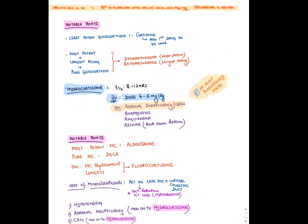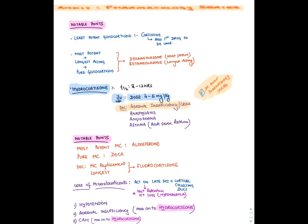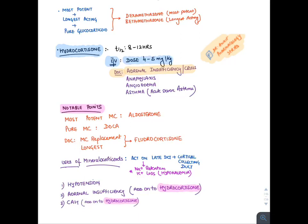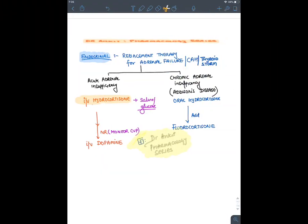Key points: the least potent glucocorticoid is cortisone. The most potent and longest-acting pure glucocorticoids are dexamethasone and betamethasone. Dexamethasone is overall most potent; betamethasone is the longest-acting. Hydrocortisone has both glucocorticoid and mineralocorticoid activity, making it the drug of choice for adrenal insufficiency. The most potent mineralocorticoid is aldosterone; pure mineralocorticoid is DOCA; most common replacement is fludrocortisone, used in hypotension, adrenal insufficiency, and congenital adrenal hyperplasia.